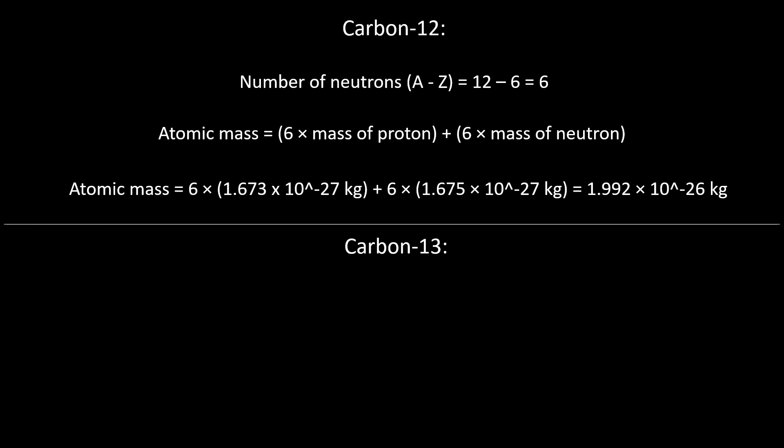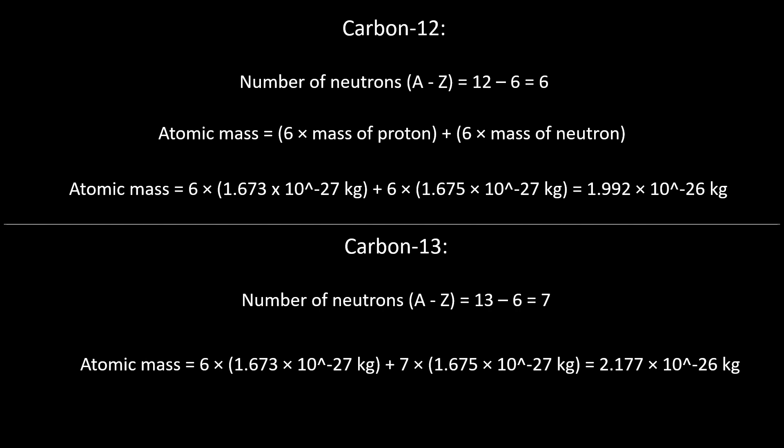For carbon-13, which has a mass number of 13, we can once again find the number of neutrons by subtracting the atomic number from 13, which gives us 7. So there are 7 neutrons. We plug this into the same equation: 6 × 1.637 × 10⁻²⁷ kg plus 7 × 1.675 × 10⁻²⁷ kg, which produces the answer 2.177 × 10⁻²⁶ kg.